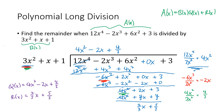Again, if we check the equation, A(x) should equal B(x)·Q(x) + R(x). I hope this video has been helpful — follow along with the examples, and good luck with your polynomial long division problems.